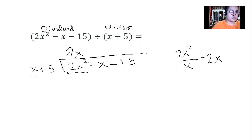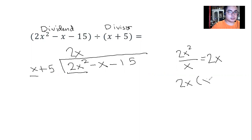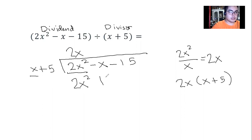Now we have the first term of the quotient. Next, we multiply 2x with the divisor x plus 5 using the distributive method: 2x times x equals 2x squared, and 2x times 5 equals 10x. Then we subtract.